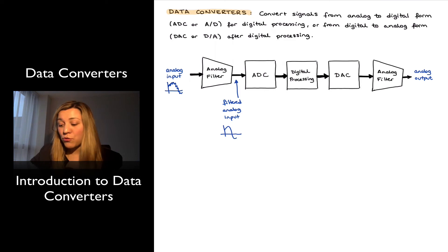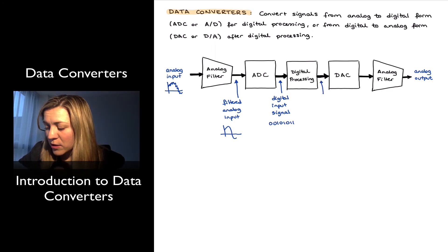Then I run my signal through the ADC, and what comes out of an ADC is already a digital signal. So it will be the digital version of my input signal, and I refer to it as my digital input signal, which is going to be a sequence of zeros and ones. The signal is now ready for processing by the digital processing system.